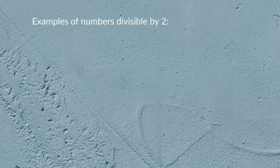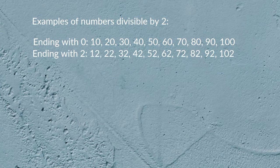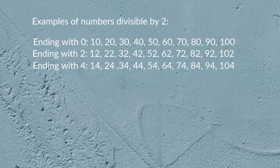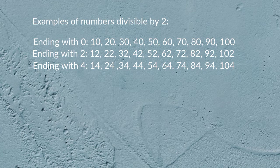Examples of numbers divisible by 2: ending with 0 — 10, 20, 30, 40, 50, 60, 70, 80, 90, 100; ending with 2 — 12, 22, 32, 42, 52, 62, 72, 82, 92, 102; ending with 4 — 14, 24, 34, 44, 54, 64, 74, 84, 94, 104.